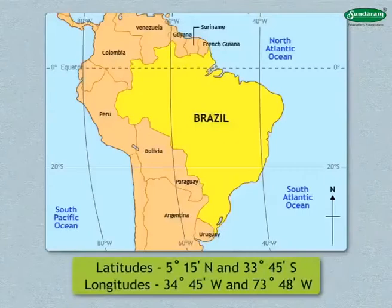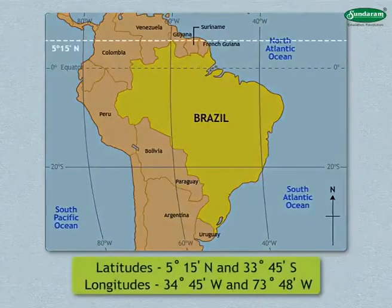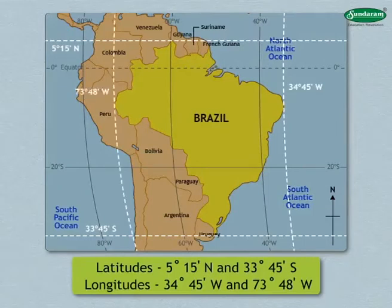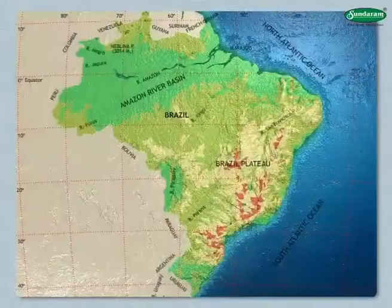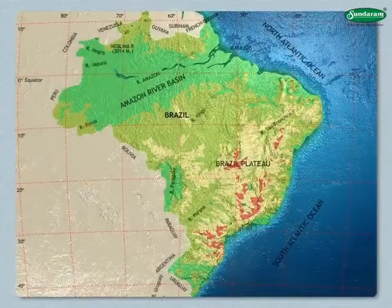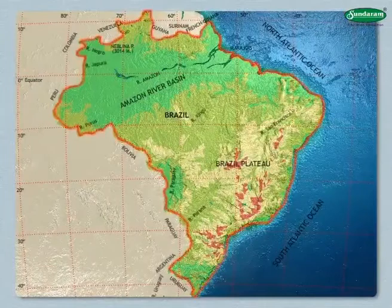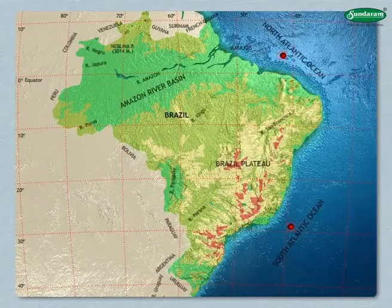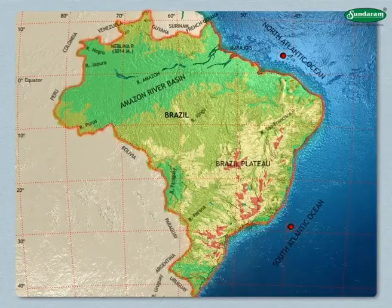Brazil extends between 5 degrees 15 minutes north and 33 degrees 45 minutes south latitudes and between 34 degrees 45 minutes west and 73 degrees 48 minutes west longitudes. The North Atlantic Ocean and South Atlantic Ocean are the oceans along the boundaries of this nation.